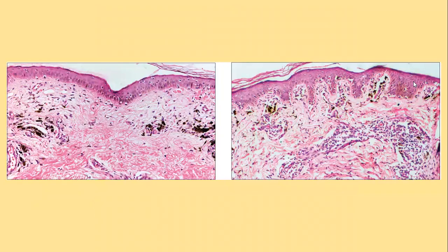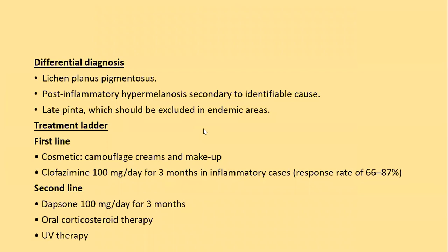Histologically there is an interface change with basal cell vacuolar degeneration and heavy pigmentary incontinence. Differential diagnosis includes lichen planus pigmentosus and post-inflammatory hypermelanosis secondary to an identifiable cause. Treatment: first line is cosmetic camouflage cream and makeup; clofazamine 100 mg per day for three months in inflammatory cases. Second line includes dapsone, oral corticosteroid therapy, and ultraviolet therapy.